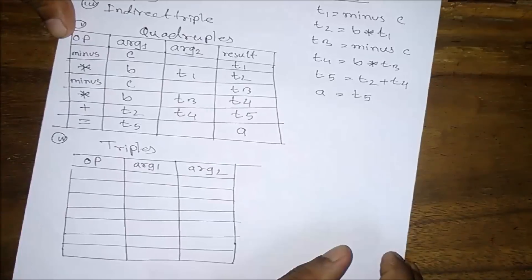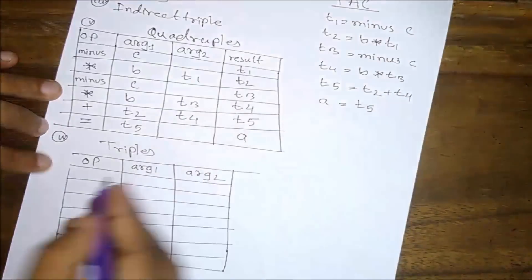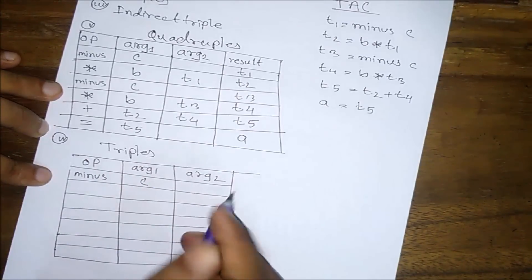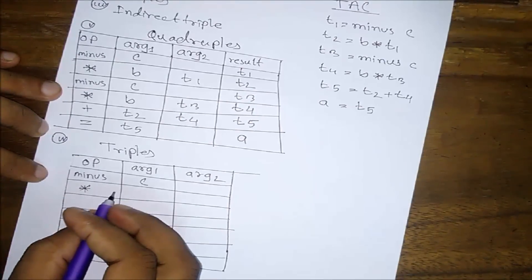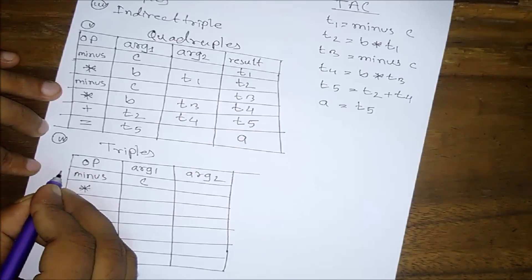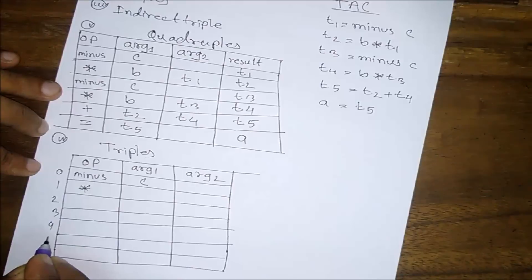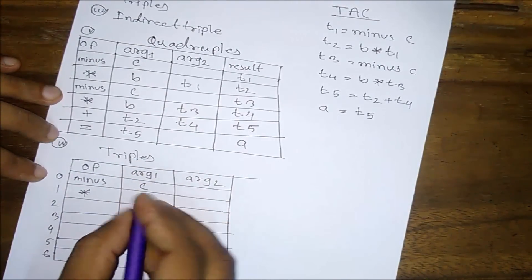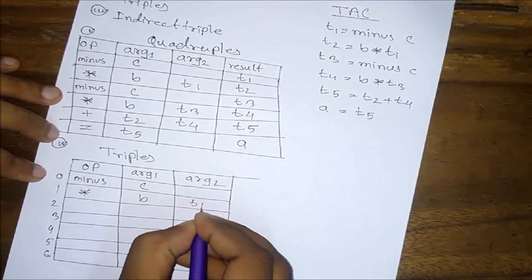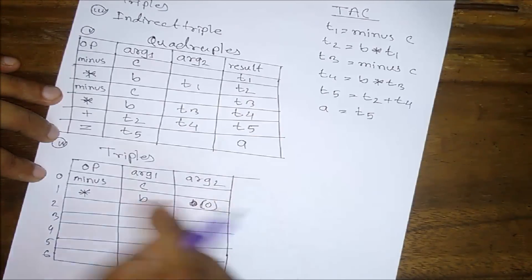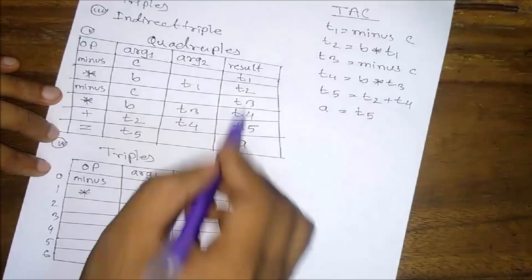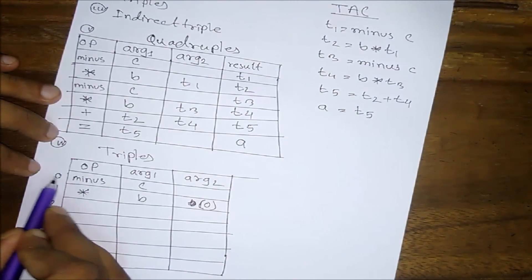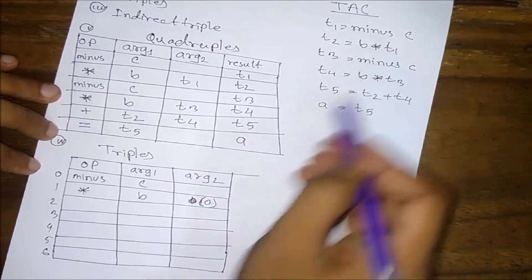Let's see the triples. The grammar: T1 — the key operator is minus, minus is the argument, and C. Second entry is multiplication. Let's use memory location addresses: 0, 1, 2, 3, 4, 5, 6. Now let's define the list. So T1 is equal to position 0. A is equal to 0. T1 is mapped to its position in the triples table.